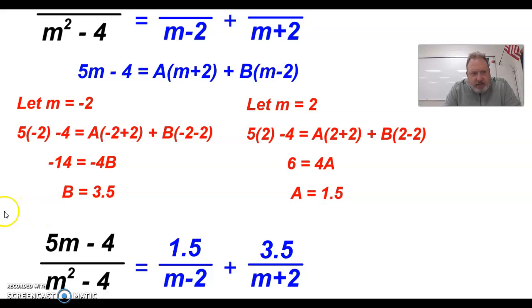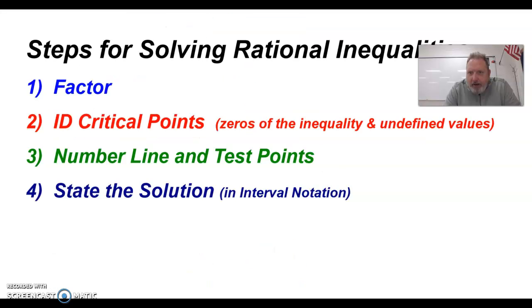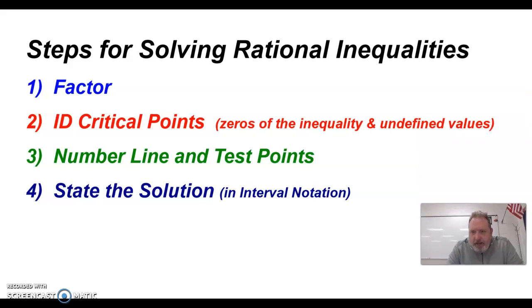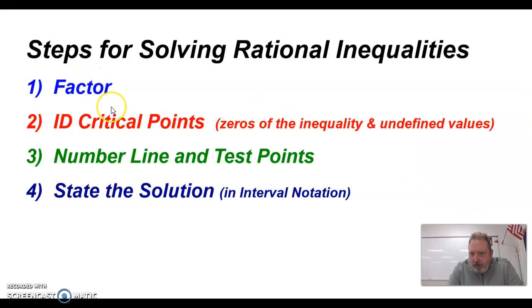All right, I've got two more slides for today. One is just a review of our steps for rational inequalities. If we need to, we're going to factor. Then we're going to identify our critical points, which is the zeros of the inequality and any undefined values. We do our number line and test points. And finally, we state our solution in interval notation.